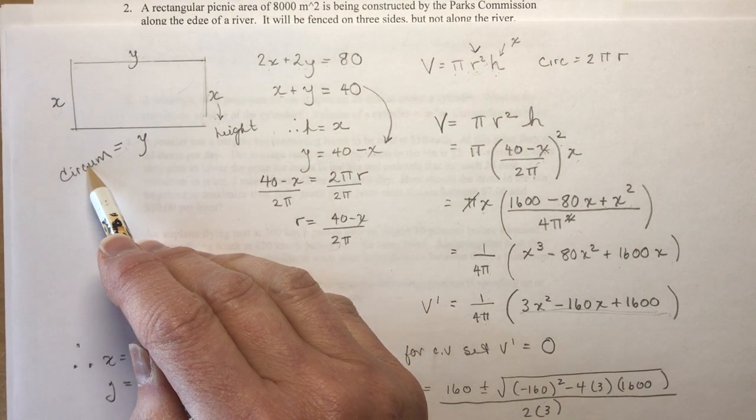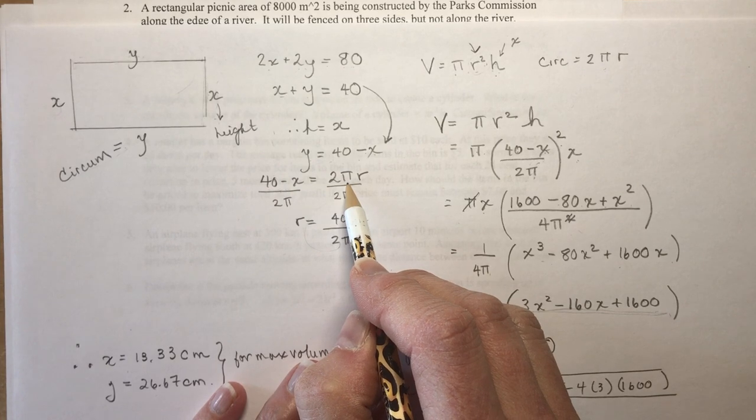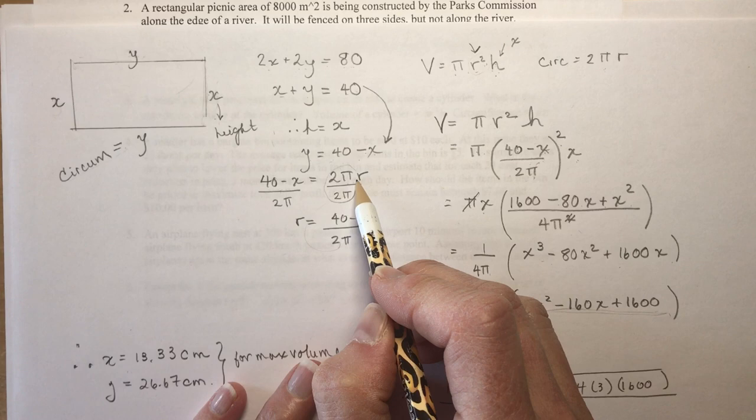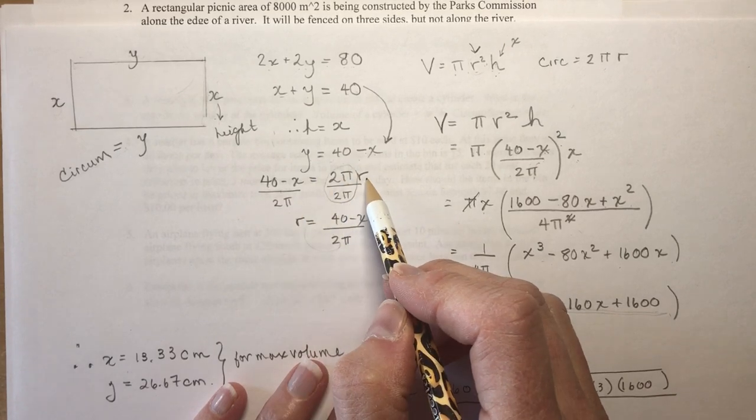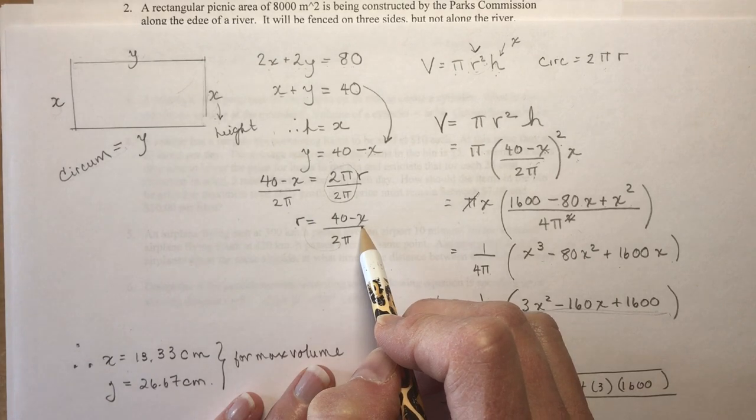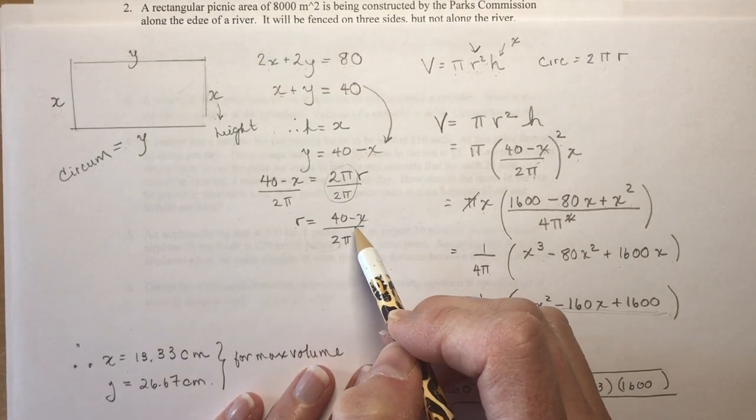I'm just rewriting this equation in terms of Y. But Y is also equal to the circumference, and the circumference is 2πR. So dividing both sides by 2π, I get an expression for R in terms of X. So now I have R is (40 - X) / 2π.